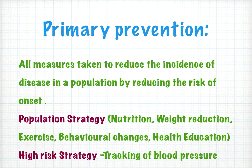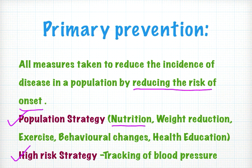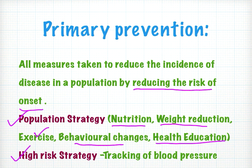Primary prevention of hypertension includes all measures taken to reduce the incidence by reducing the risk of onset. There are two strategies: population strategy and high-risk strategy. Population strategy includes proper nutrition, weight reduction, exercise, behavioral changes such as reducing alcohol and smoking, and health education. High-risk strategy uses tracking of blood pressure to identify at-risk individuals and implement targeted control strategies.